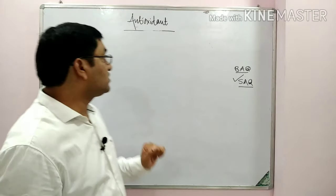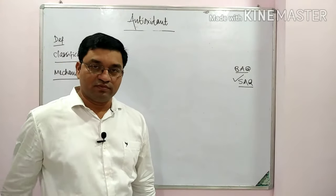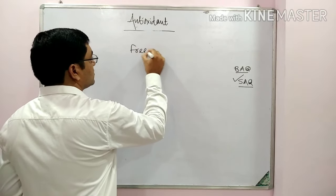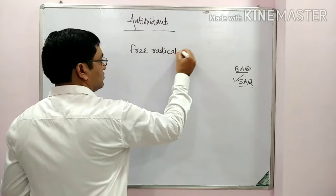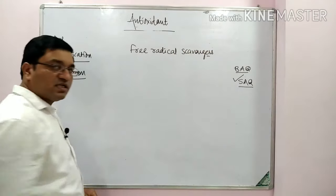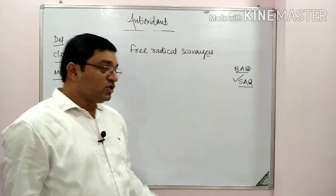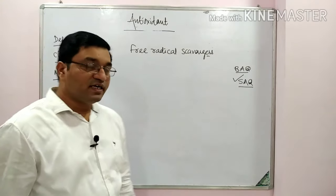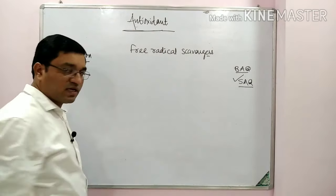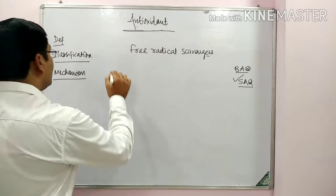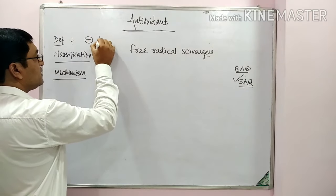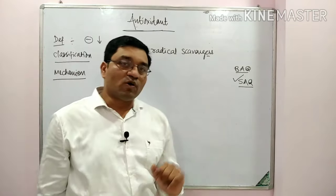Today's topic of discussion is antioxidants, also known as free radical scavengers. In the last lecture we studied about free radicals. To protect from free radicals there is a system known as the antioxidant defense mechanism. Antioxidants are substances which inhibit or decrease the oxidation of compounds.